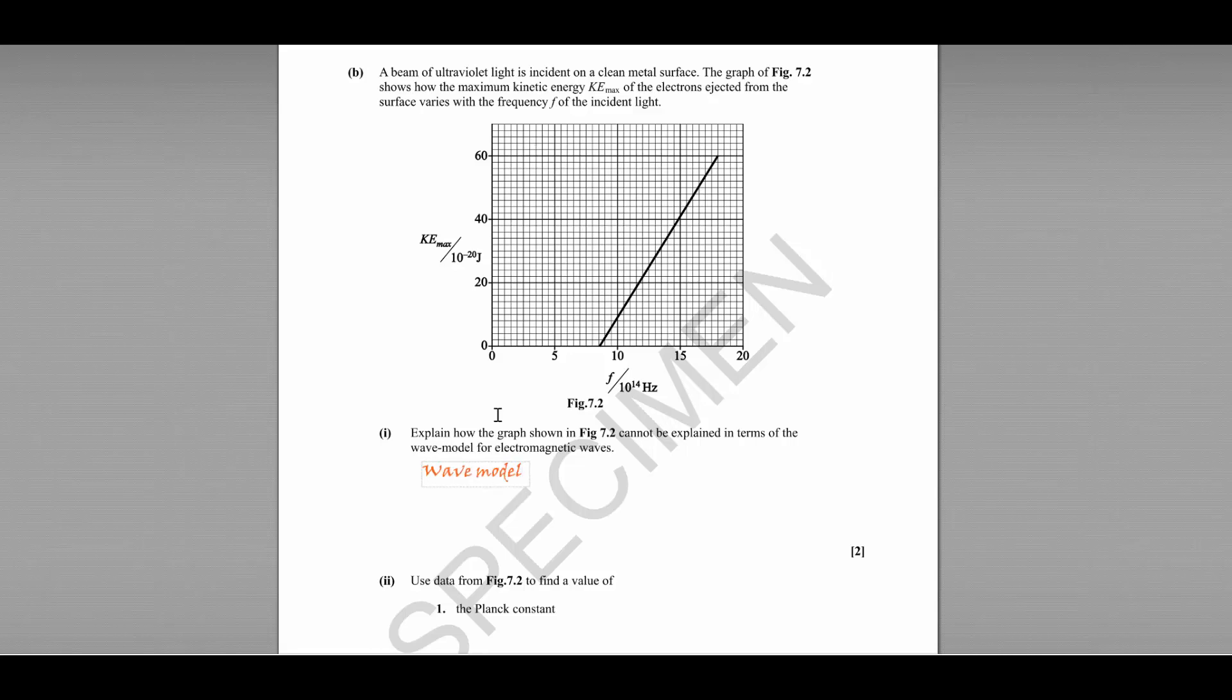So the wave model can't explain the sudden cutoff at f equals 7 times 10 to the 14. It also cannot explain why frequency is proportional to kinetic energy. So if you think about it, the wave model says it should be the intensity of the light, the amount of waves striking the metal, that dictates the kinetic energy, not the frequency of those waves. Whereas the photon model tells us that frequency is related to energy of a photon, and so that can be used to explain why a higher frequency, a higher energy photon, will allow electrons to be ejected from the surface.